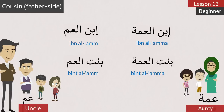Now we see the cousins from the father's side. Ibn al-Am — son of uncle. Bint al-Am — daughter of uncle. Ibn al-Amma — son of aunt. Bint al-Amma — daughter of aunt. Let's repeat. Ibn al-Am, Ibn al-Amma, Bint al-Amma.